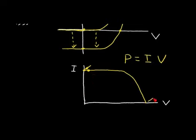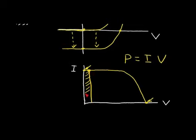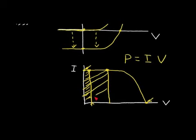At the open-circuit point we have no current flowing, so the circuit is open and we see a high voltage, but since current is zero we again extract no power. However, if we operate at an intermediate point, the power we extract is the product of current times voltage — represented by the area of the rectangle under that point on the curve. Operating further up the knee of the curve maximizes this area.